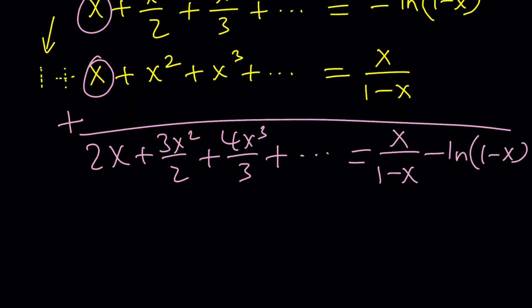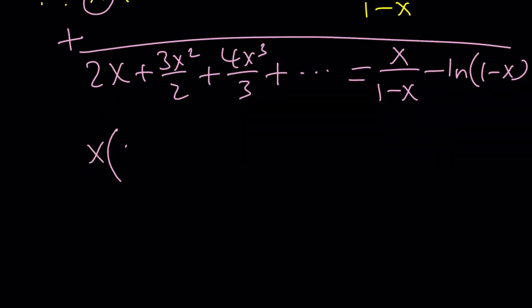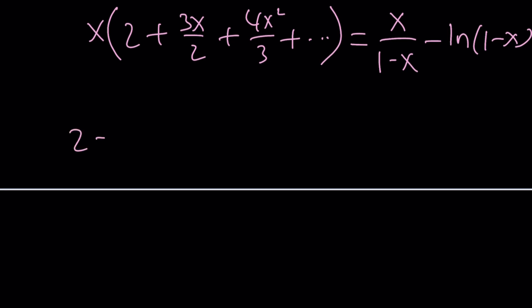It's x over 1 minus x minus ln 1 minus x. Wait a minute. I need 2. No worries. We can factor out an x and that'll be taken care of. Nice and smooth, right? Again, this is infinite. But we're going to be doing what? We're going to be dividing everything by x. We're so close, right?